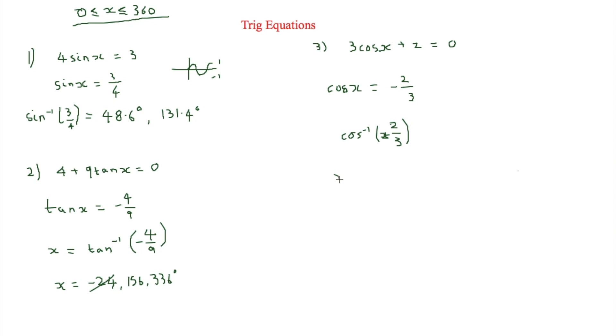Now here we find out that x is equal to 131.8. Now of course what we do is we do 360 minus the answer. So 360 minus 131.8 is equal to 228.2.